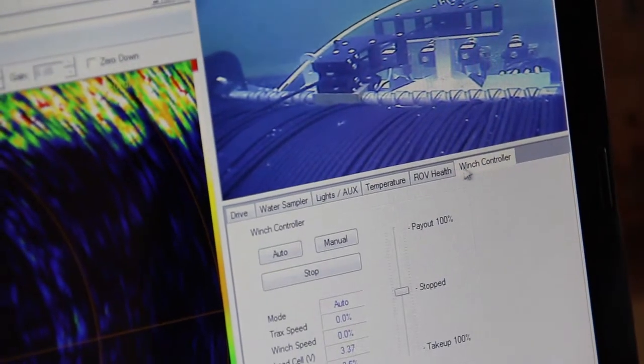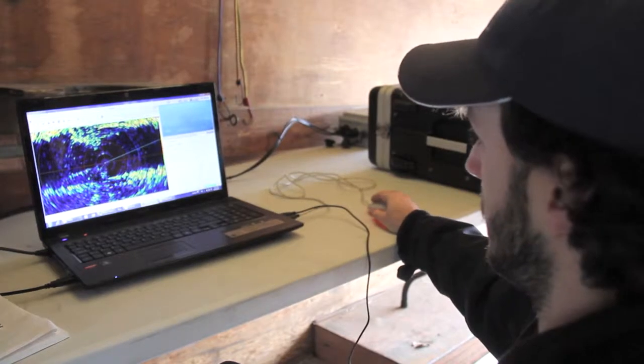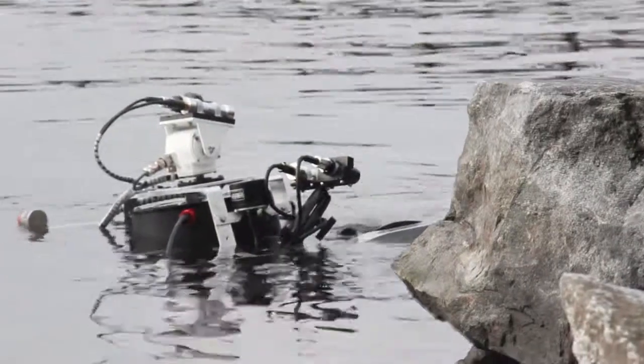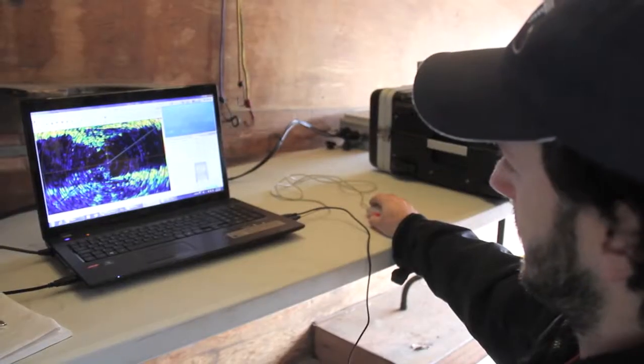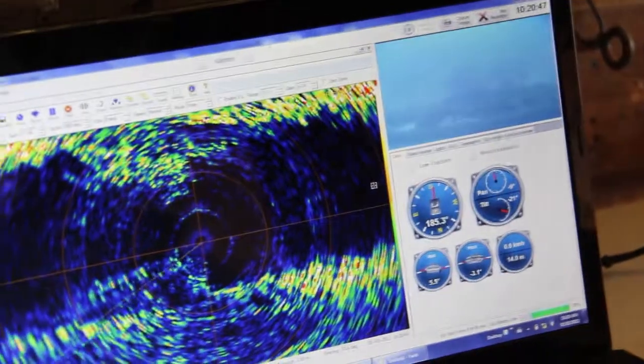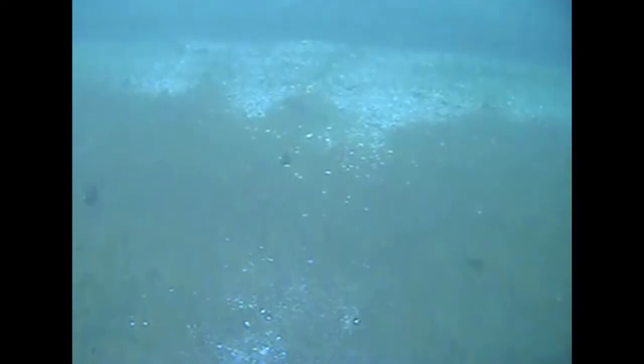And then to turn the winch off we have this winch controller page. For video feeds here we can switch cameras by clicking that. And when our sonar is turned off it will pop back up to our main camera and we can switch around and start the sonar again.